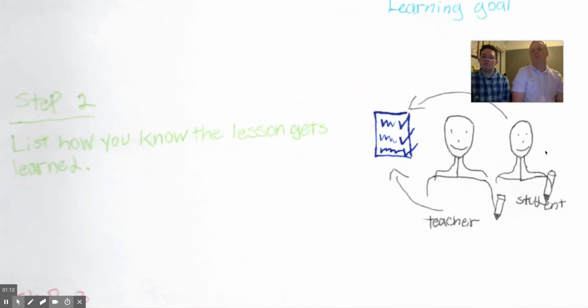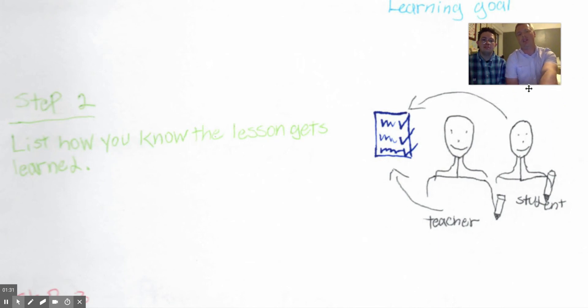List how you know the lesson gets learned. Okay, so create your list or create your series of non-negotiables, or whatever it is that will indicate to you that the lesson's gotten learned. I love this picture, EJ. Can you tell us about it? The teacher will teach the students to learn about getting the knowledge of a list.